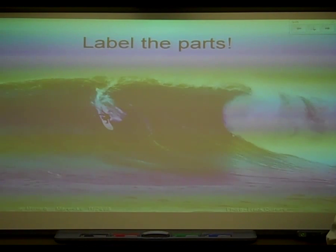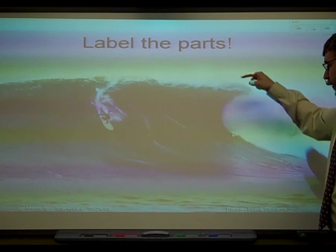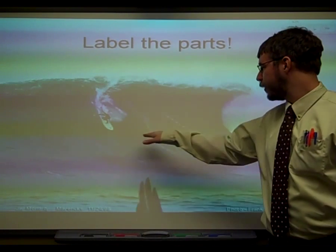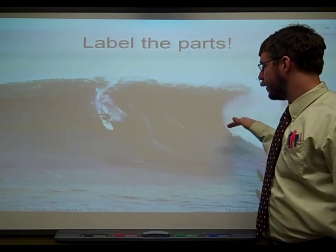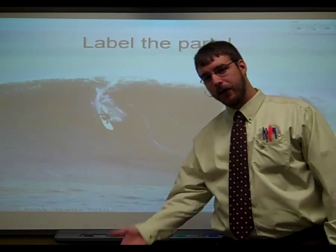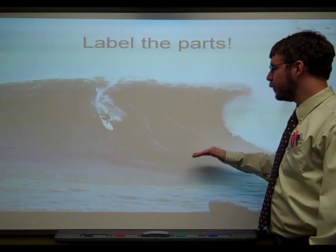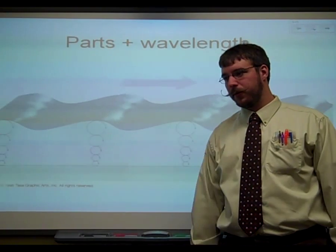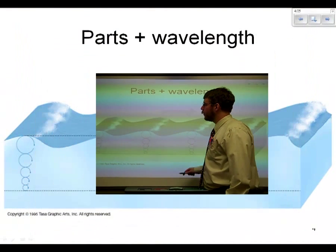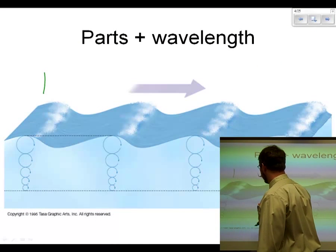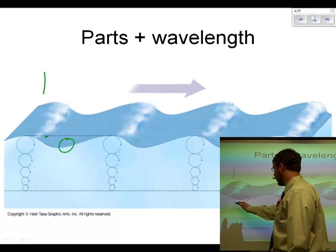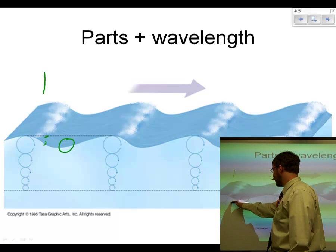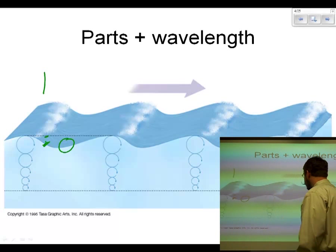Here's a picture of a wave — label the parts. Up here you've got the crest, down over here would be the trough, and halfway in between, right where the water is at the still water level. It doesn't mean that there's no energy there; it just means that for normal water there would be no energy. Again, you've got your crest, you've got your trough, and halfway in between is the still water level.